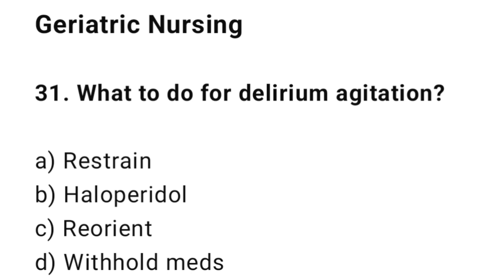Geriatric nursing. Question number 31: What to do for delirium agitation? The correct answer is C, reorient.